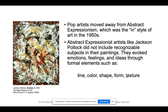Pop artists moved away from abstract Expressionism, which was the in-style of art at the time. Abstract expressionist artists like Jackson Pollock — who was famous for his splatter painting style — did not include recognizable subjects in their paintings. It was just more about emotions, feelings, and ideas through the formal elements such as line, color, shape, form, and texture.